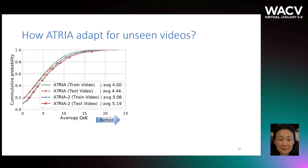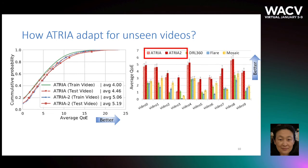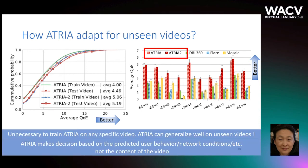To illustrate if ATRIA adapts well for unseen videos, we compare the average QoE for streaming videos used in training and videos not used in training. The two performance curves are similar. We also evaluate the performance when we train ATRIA with only one video. The result shows that our technique still outperforms the other techniques in all video streaming, and it suggests that it is unnecessary to train ATRIA on any specific video, and that ATRIA can generalize well on unseen videos.